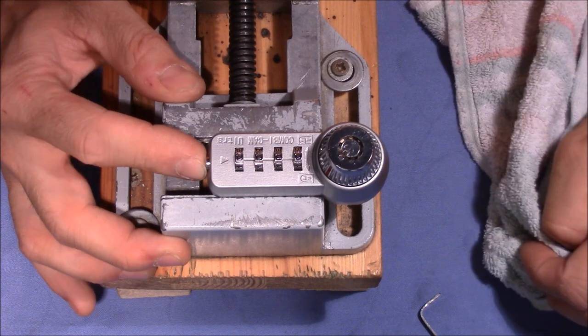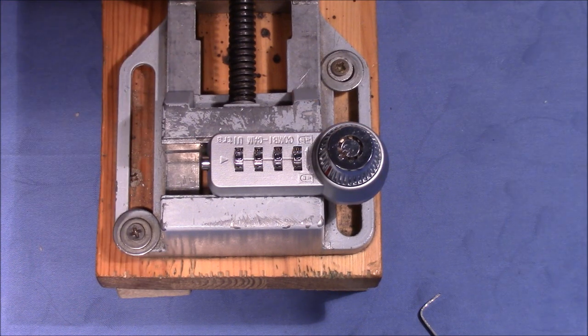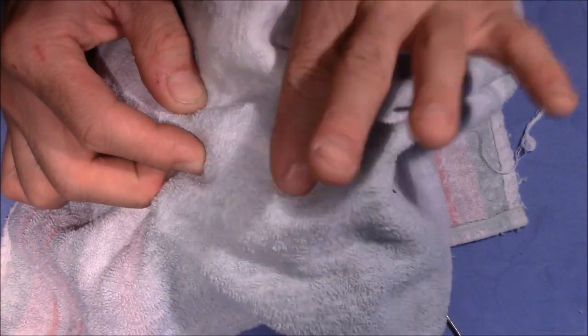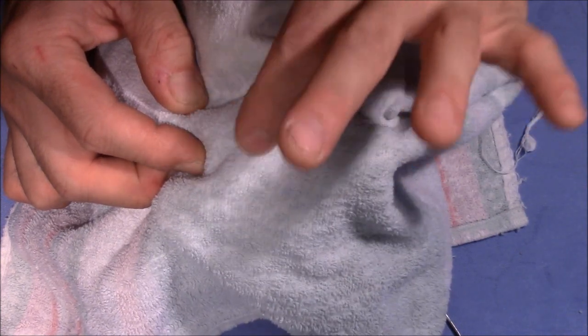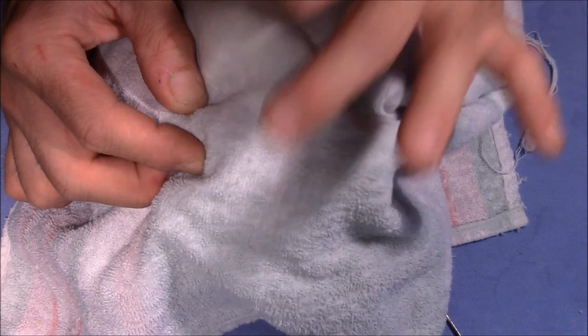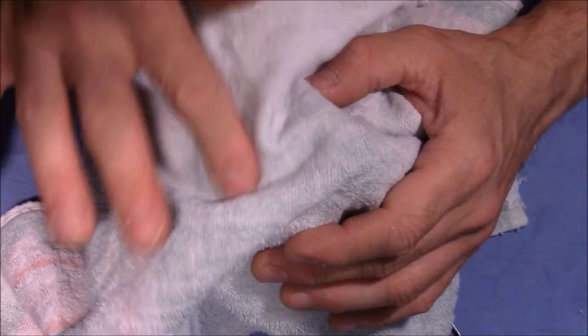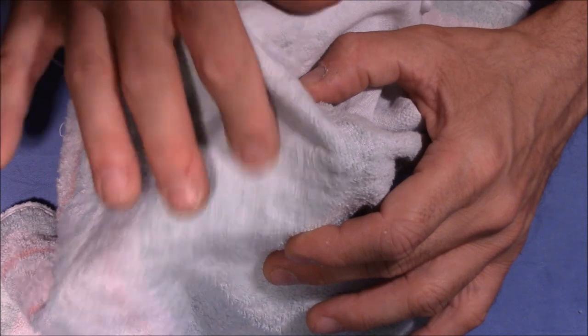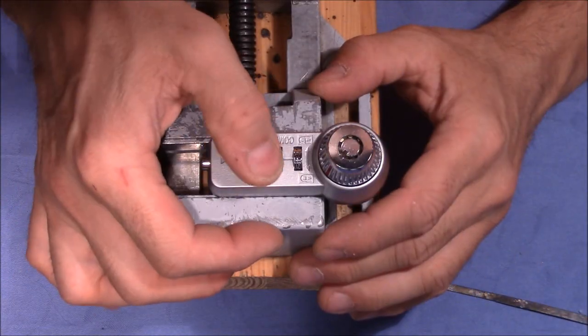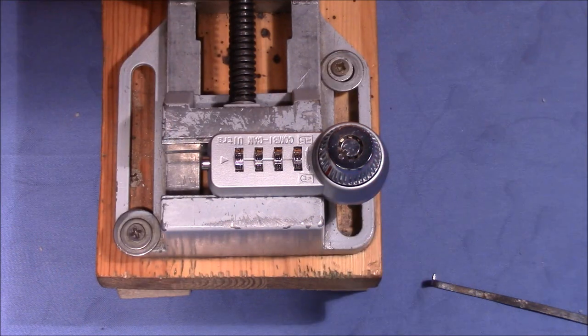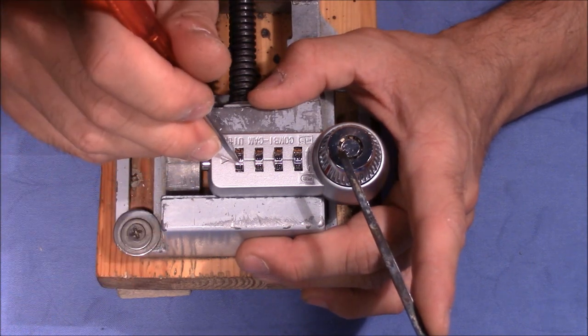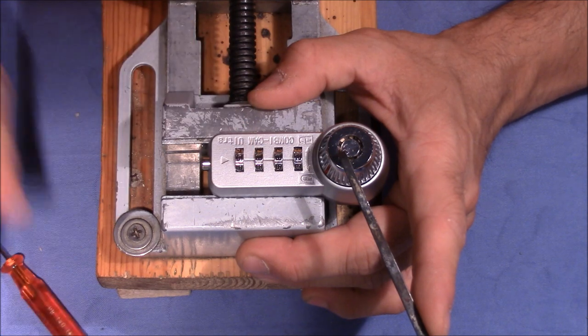But before we need to change the code. Currently 0000 is the entered code. Let's change that. That should be enough. Release the button and shuffle the wheels again. Now we have an unknown code. Let's apply tension and for turning the wheels I will use a screwdriver because this is much more comfortable. Let's zoom in, the show can begin.